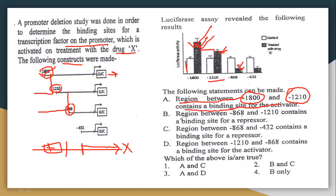For option B, the region between minus 868 and minus 1210 — the expression level is more than the control level, so this option is not correct. For option C, the region between minus 868 and minus 343 may contain a binding site for a repressor, because the expression level is below the control level. So the answer will be options A and C.